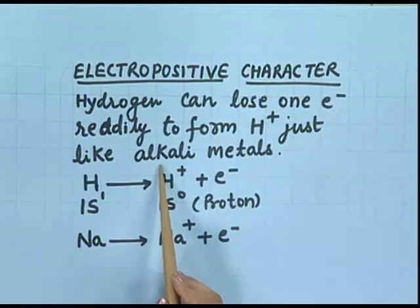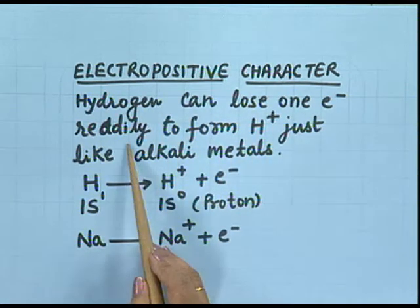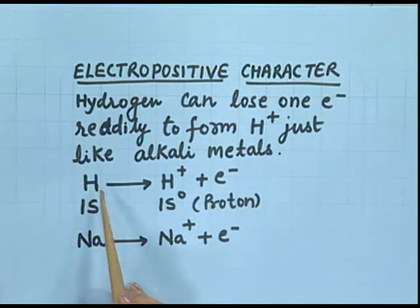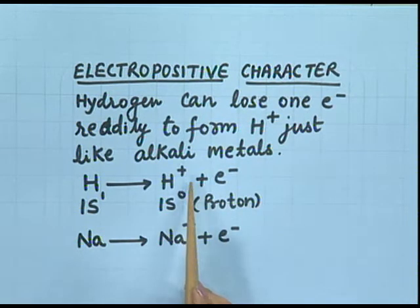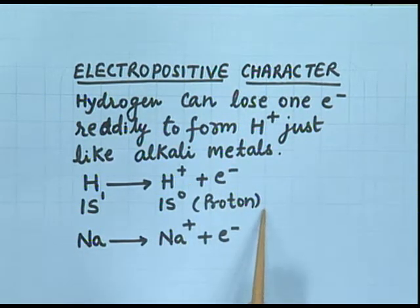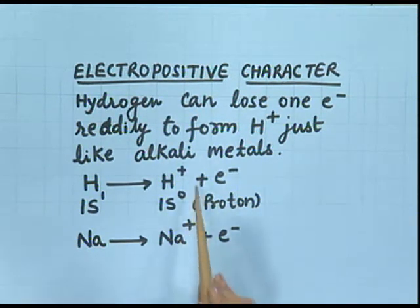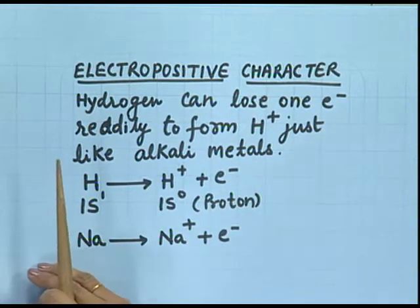Electropositive character: just like alkali metals, hydrogen can also lose one electron readily to form a hydrogen ion. Hydrogen loses one electron and a hydrogen ion is formed, which is now a proton. Sodium easily loses its valence electron and is converted into a sodium ion. Again, hydrogen and alkali metals are resembling each other in this property.